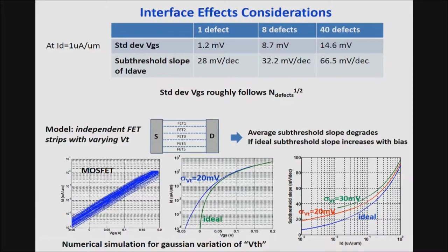As a result, for the TFET the subthreshold slope varies with current through the device in a manner calculable for different amounts of standard deviation in threshold voltage. For example, with 30 millivolts of standard deviation, the I60 current is reduced by a factor of 2 from this effect alone. Thus, charges associated with interface states can easily mask the ideal behavior of the device.